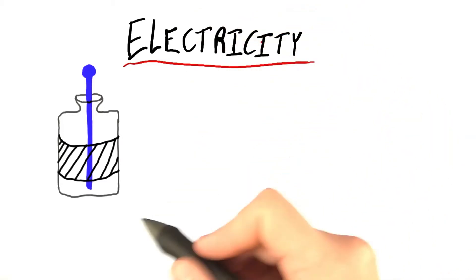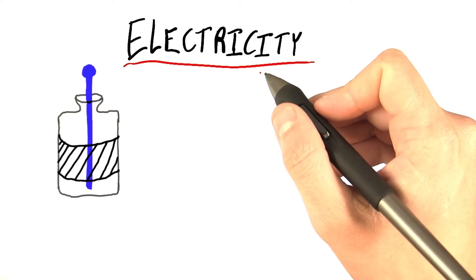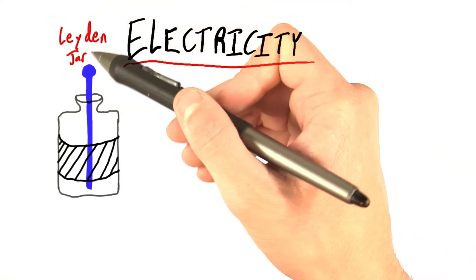In the 18th century, it was all the rage to study electricity. Everyone was doing it, and the thing they were storing their electricity in was known as a Leiden jar.